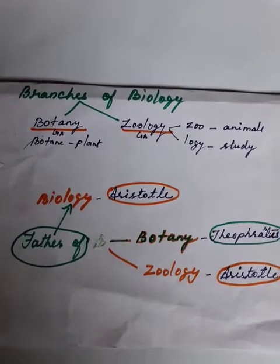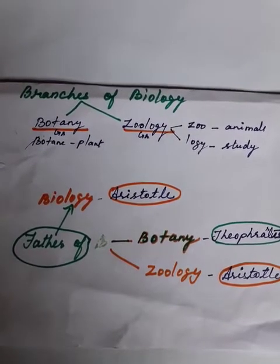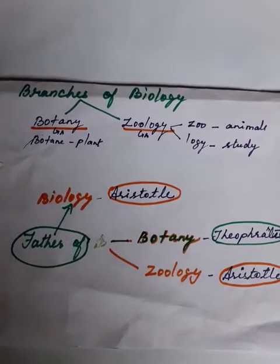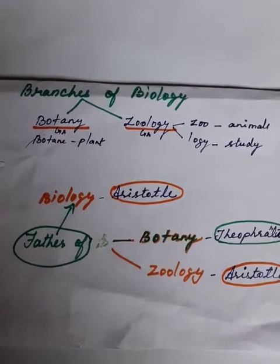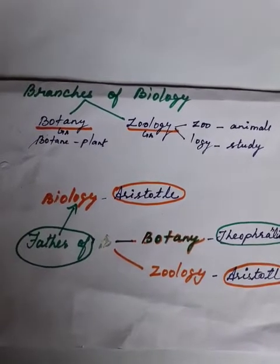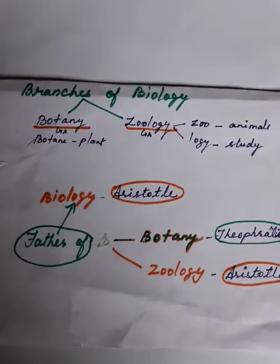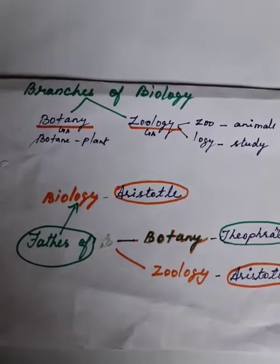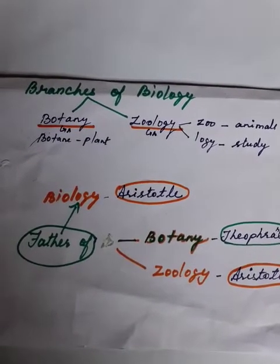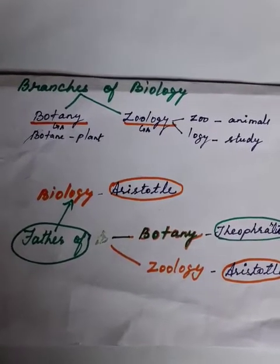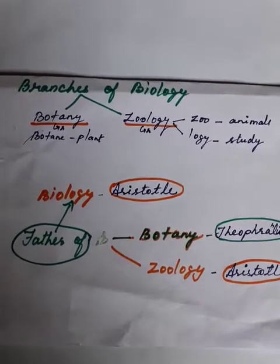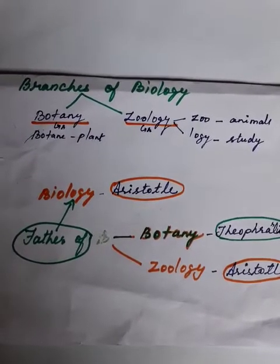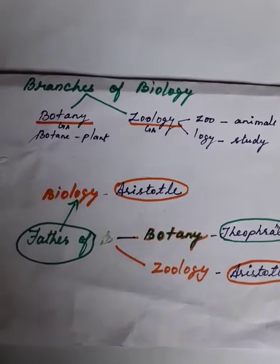One is botany, another one is zoology. Botany is a Greek word meaning plant. Zoology — zoo means animals, logi means study. So the study of animals is known as zoology, and the study of plants is known as botany.